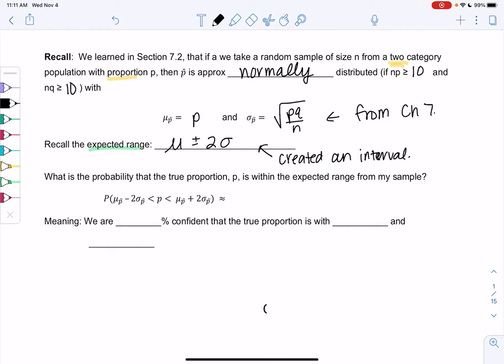I'm going to think about this a little bit backwards now. What is the probability that the true proportion p is within this expected range from my sample? So you'll notice my endpoints are the expected range. We have the probability mu minus 2 sigma is less than p, which is less than the other endpoint, mu plus 2 sigma. And we learned that two standard deviations was about 95.45 percent from the empirical rule.